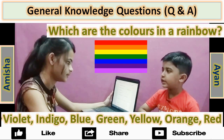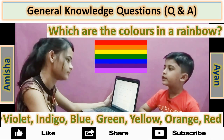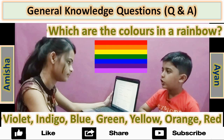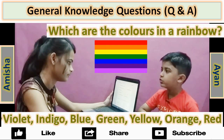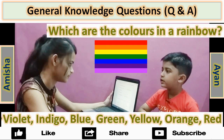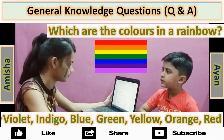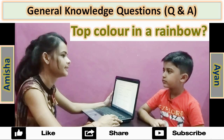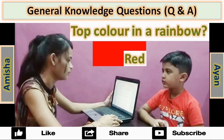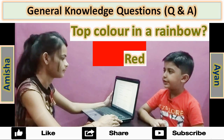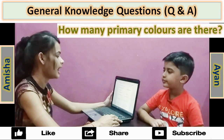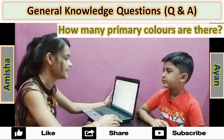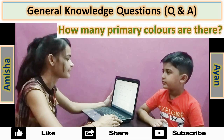Violet, Indigo, Red, Yellow, Blue, Orange and Green. Top color in a rainbow? Red. How many primary colors are there?